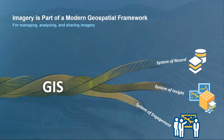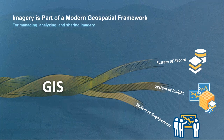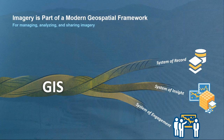GIS provides a system of record — a way of managing authoritative data that is constantly being updated from all those sources. With your data in place, GIS provides a system of insight to perform analytics. Data is just data; you need to perform analytics on it to result in information that drives business processes. Finally, the system of engagement is about getting this data, analytics, and information into the hands of your business.